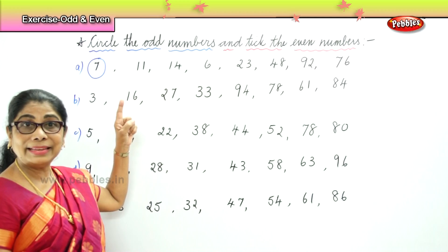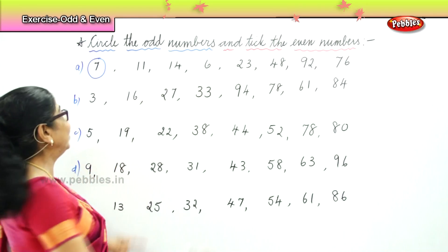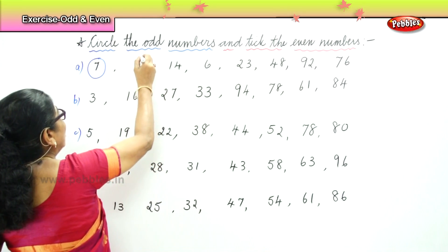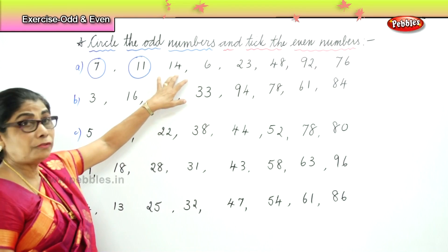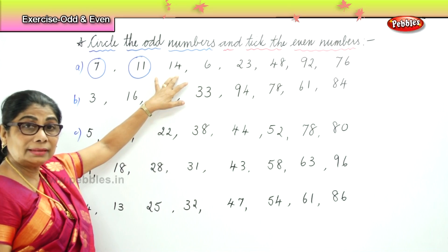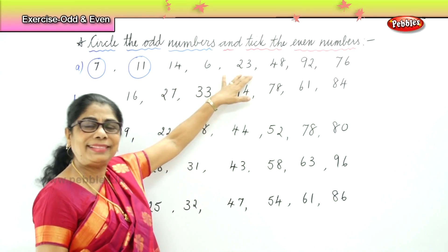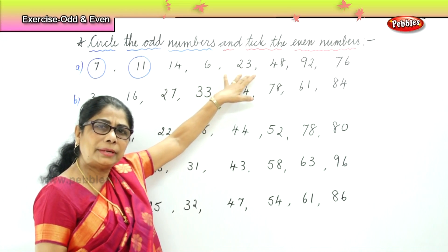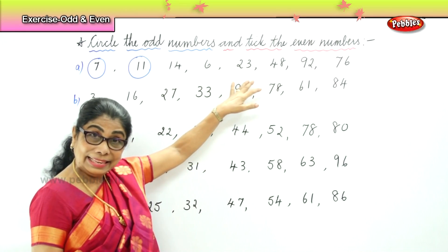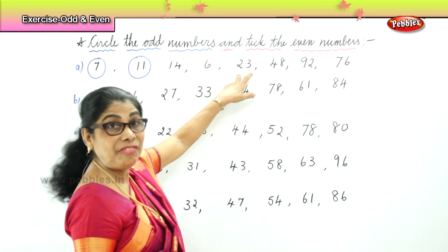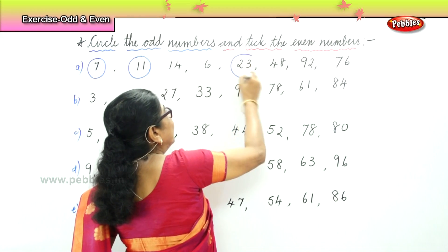Then here, eleven ends in one — very good, so it's an odd number. Next, is fourteen an odd number? No. Is six an odd number? No. Is twenty-three an odd number? It ends in three — yes, so twenty-three is an odd number.